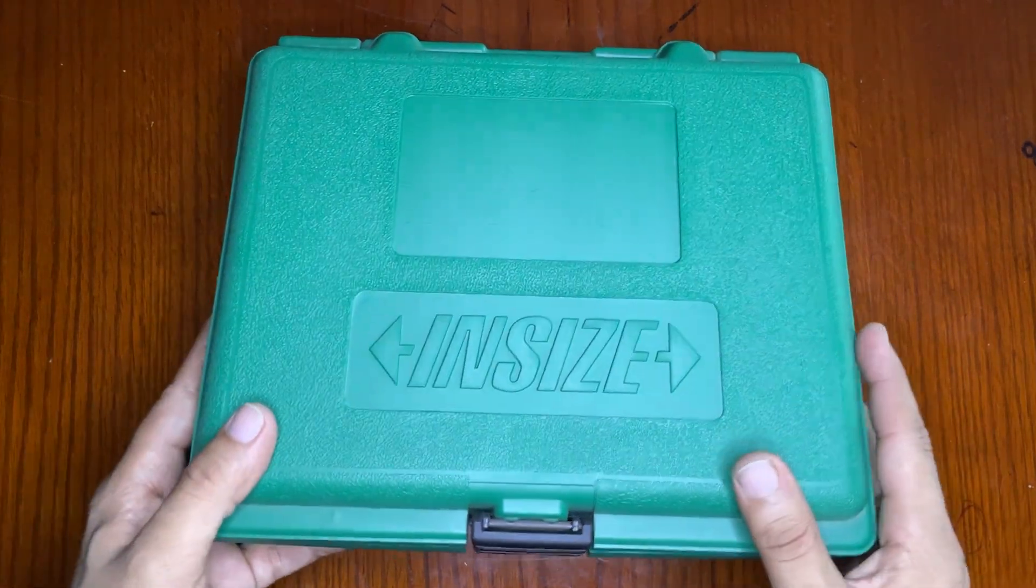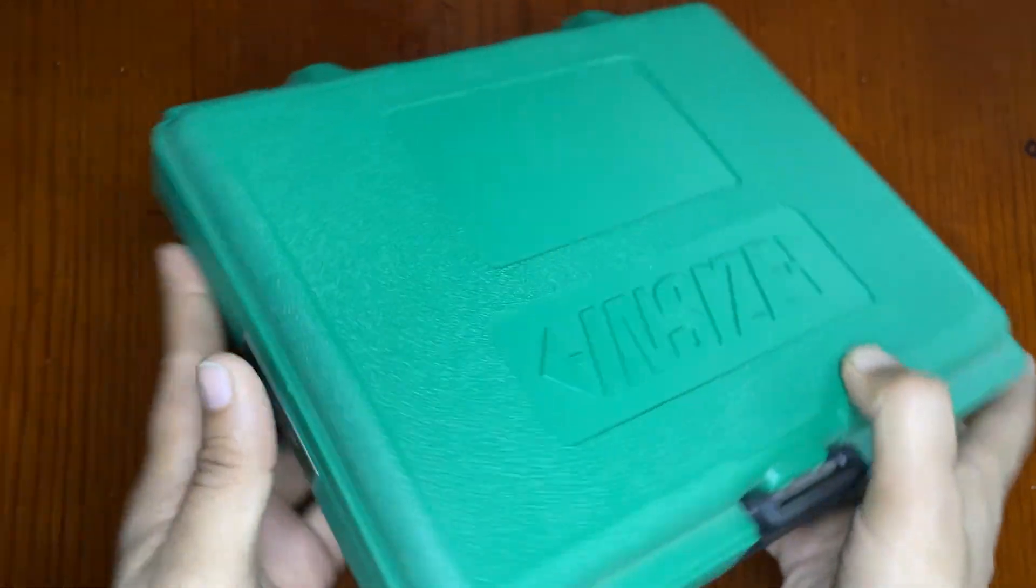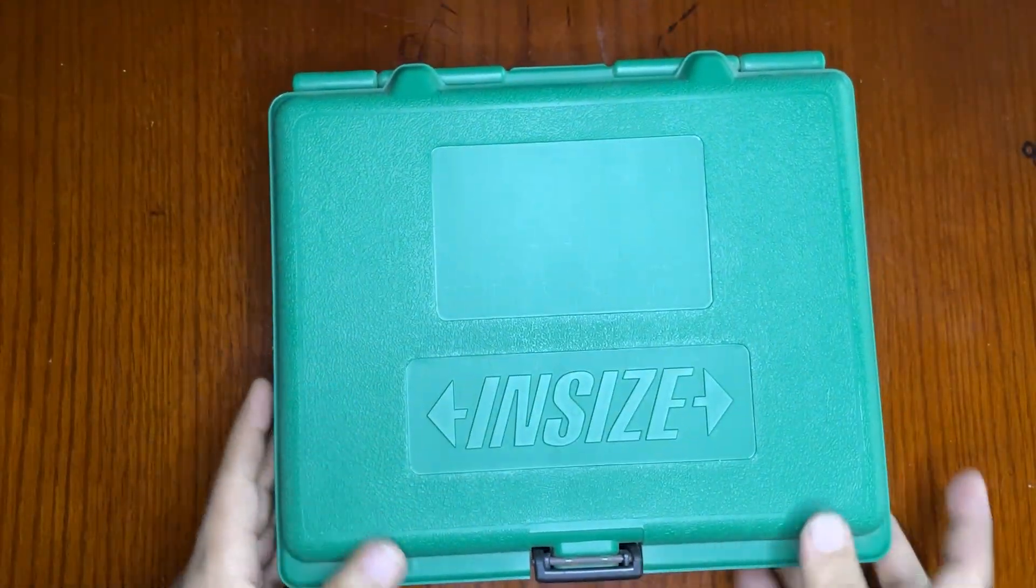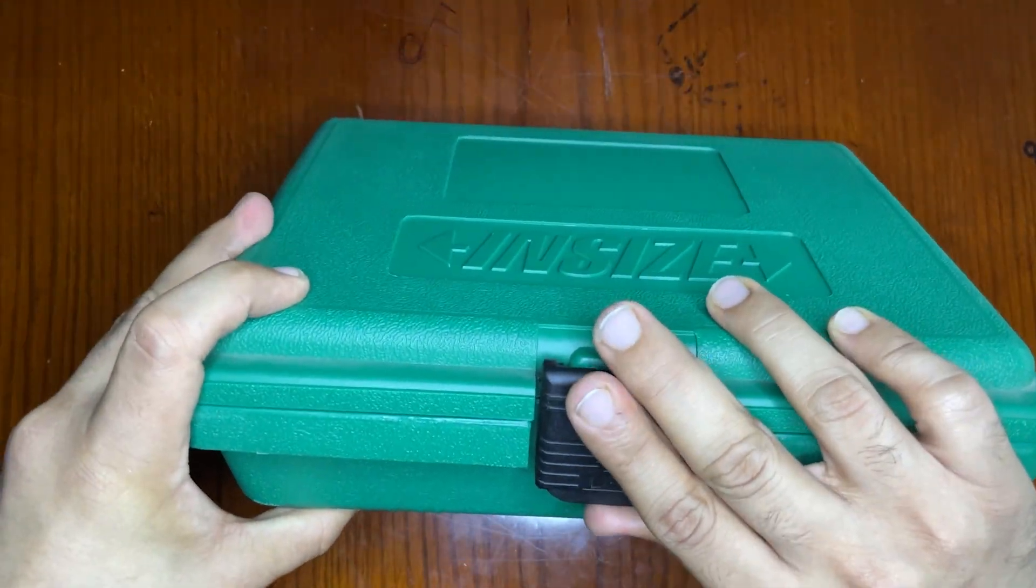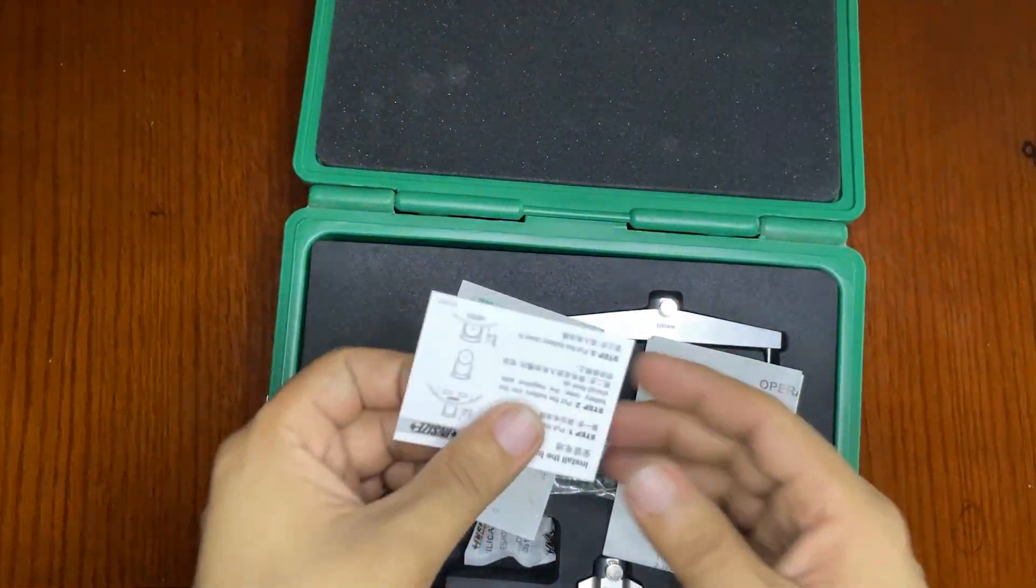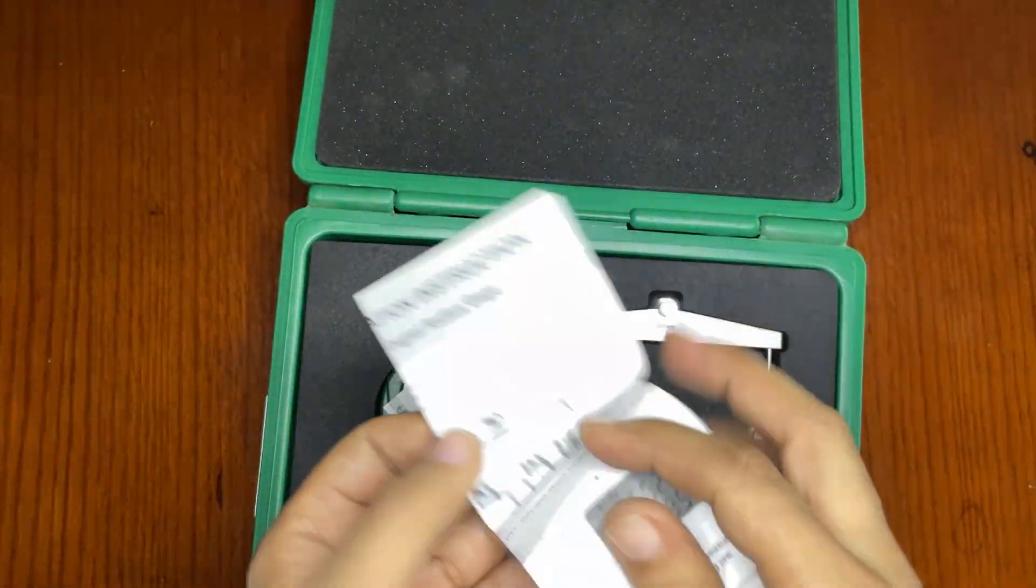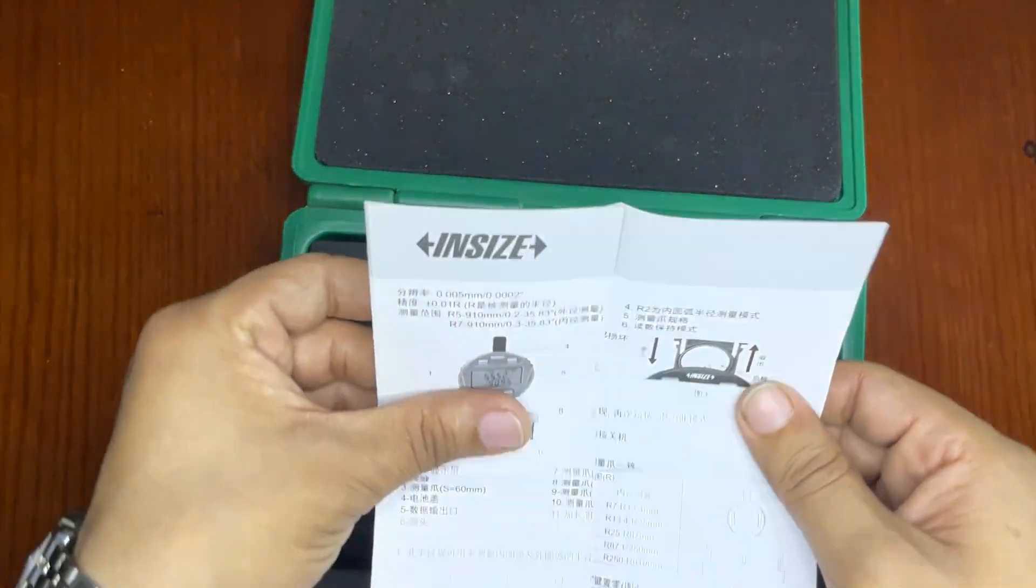Hello there, today we have another tool: a digital radius gauge from Insize. Let's open it. What we have here are some papers, identity cards, and of course an instruction manual, both in Chinese and English.